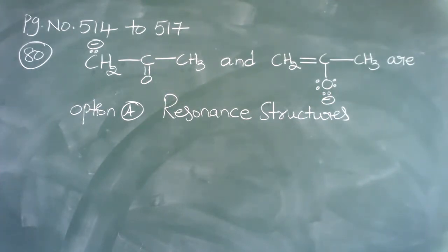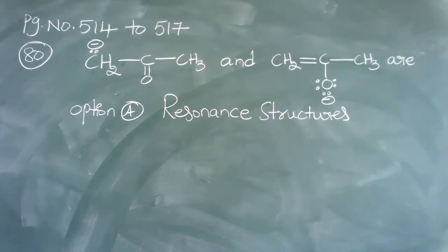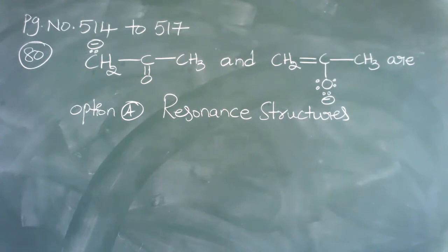So these types of structures are called resonance structures. Once again: the structures of the same species which differ in the position of bonds but not in the position of atoms are called resonance structures. Take a screenshot. In the chemical bonding chapter also we discussed about resonance structures — once check that chapter.